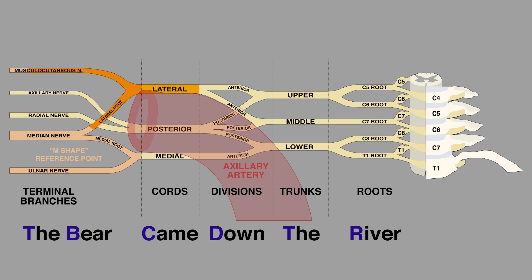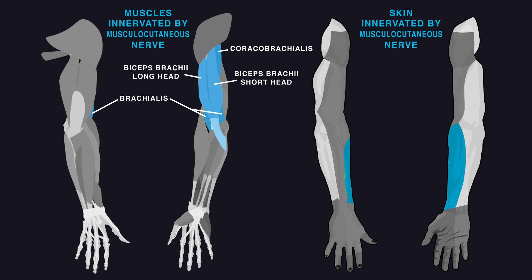The lateral cord splits into the musculocutaneous nerve and the lateral root of the median nerve. The musculocutaneous nerve supplies muscles in the front of the arm, the biceps brachii, the brachialis, and the coracobrachialis muscles. It provides sensation to the lateral part of the forearm.